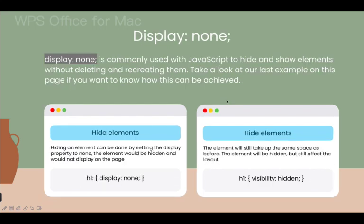We also have the display none property, which is most commonly used with JavaScript when we want to show or hide a particular element based on how the user interacts with the website. We also have visibility hidden, which removes the element visually from the screen but doesn't remove it totally — the element still exists in that exact same place where it used to be.